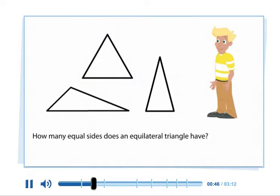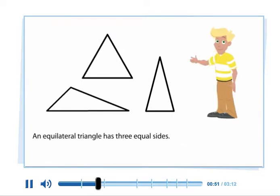How many equal sides does an equilateral triangle have? An equilateral triangle has three equal sides.